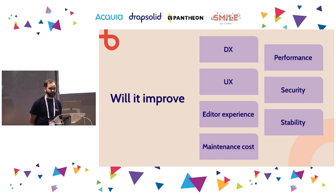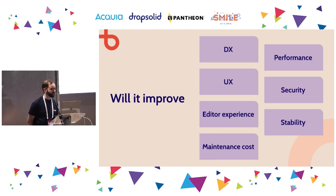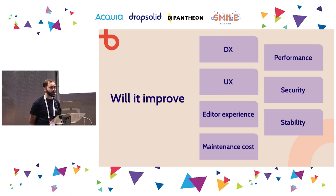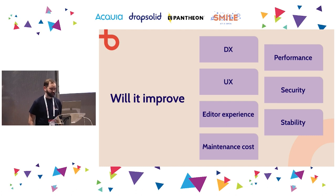Performance: a faster site leads to better SEO, possibly better conversions, and more income. Security: it usually comes down to preventing costs from a potential breach. Stability: if your site is down it costs the client money — improving stability has a direct impact on their bottom line. And maintenance cost: how much does it cost to run the site year over year? If you can lower that, the site simply becomes cheaper to maintain every year.